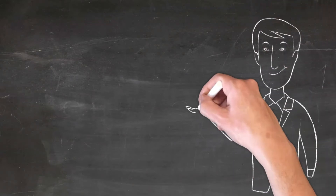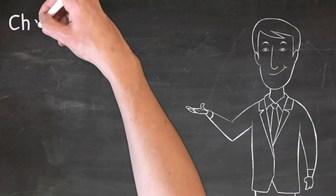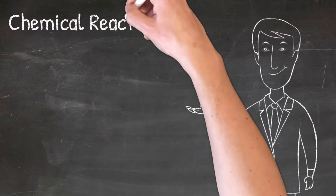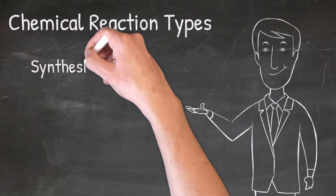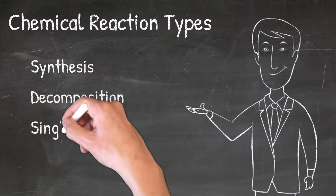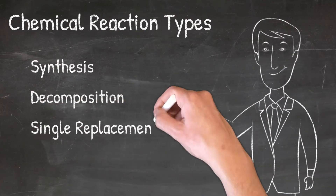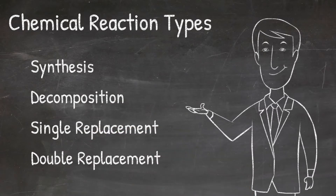There are many types of chemical reactions. In this video we will cover four of the most common types: synthesis, decomposition, single replacement, and double replacement. You will learn two easy ways to look at a chemical reaction and identify what type of reaction it is.